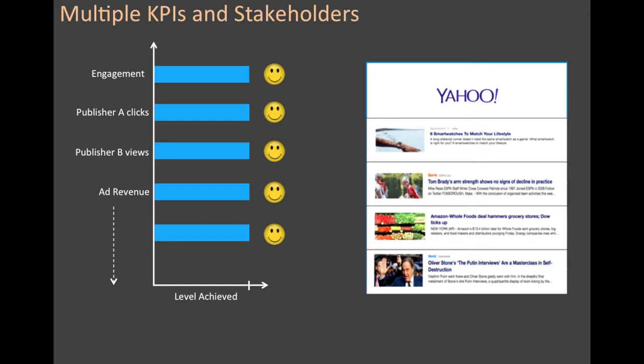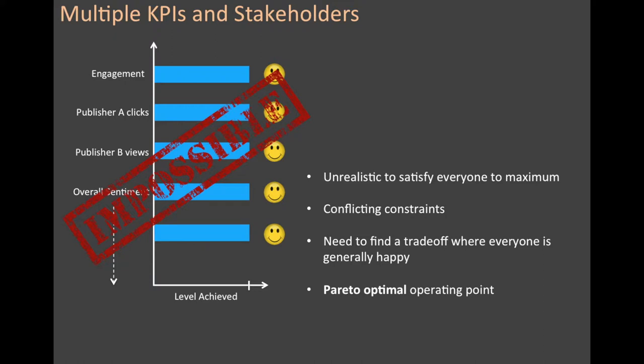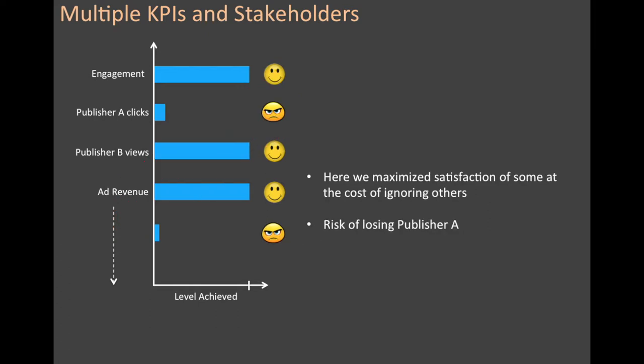In an ideal world you might try to do the maximum possible with respect to each of these KPIs. However in reality that's often not a practical possibility. It is unrealistic to satisfy every KPI to the maximum because there are conflicting constraints and we generally need to find a trade-off where everyone is happy. In optimization such a point is called a Pareto optimal operating point. If we were to act in a way oblivious of this trade-off, we might end up in a bad situation where maybe we're doing extremely well in engagement and for publisher B, but publisher A we're really under-delivering clicks and that publisher is unhappy.